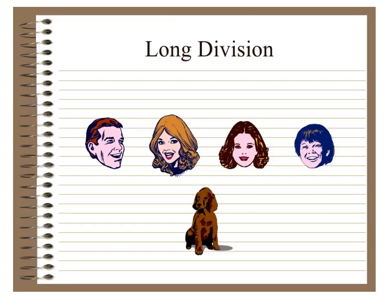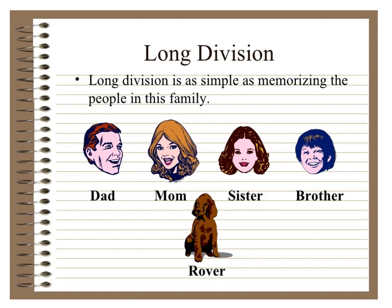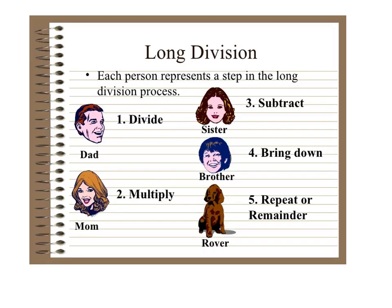Long division. Here we have the members of a family: the dad, the mom, the sister, the brother, and Rover the dog. Long division is as simple as memorizing the people in this family. Each person represents a step in the long division process.